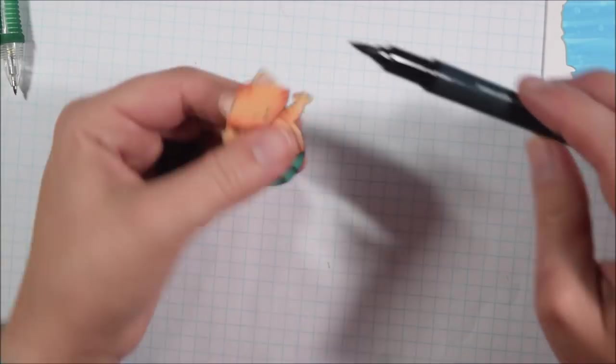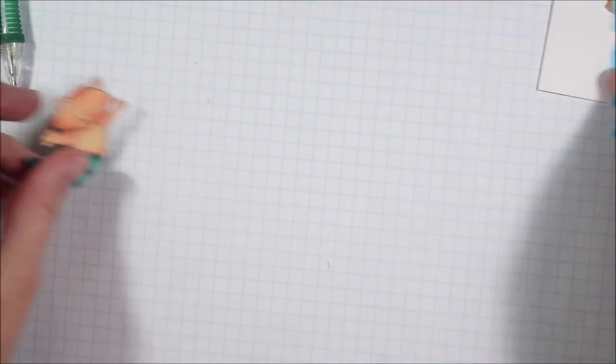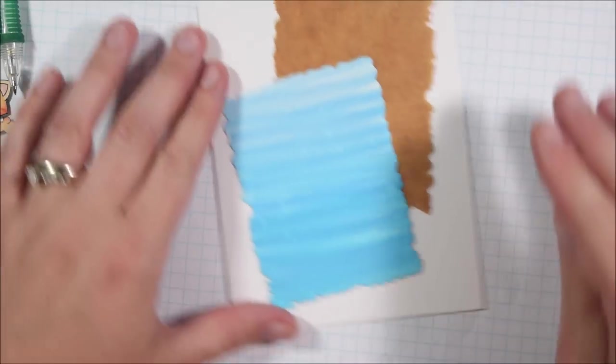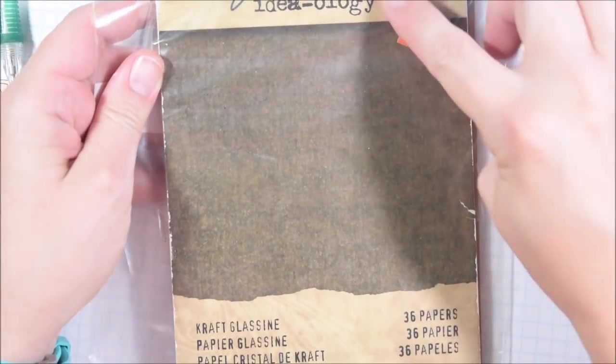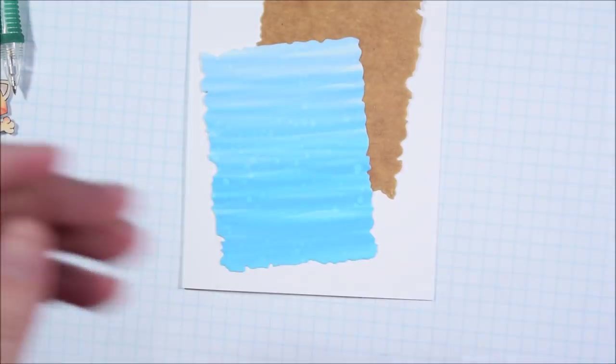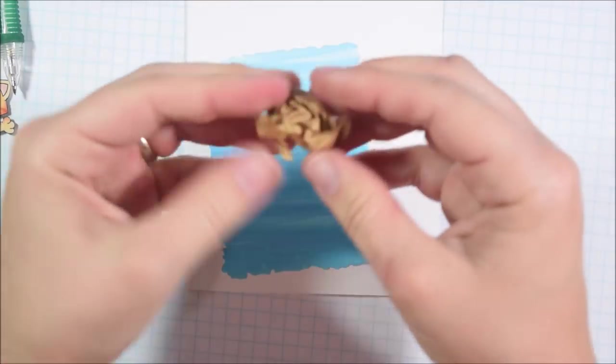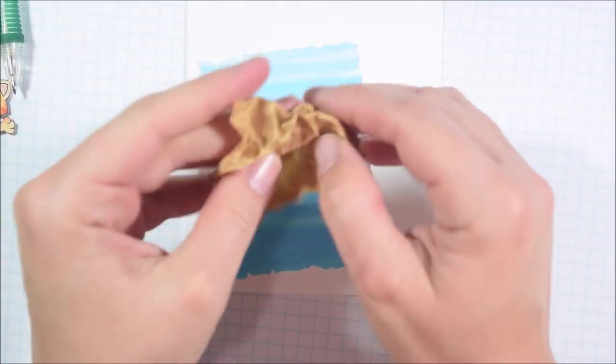Then once he's finished I went around it with a Memento Tuxedo Black marker because I fussy cut out Newton. In this case I really did want it to be fussy cut because I want him to look like he's really part of the ocean scene.